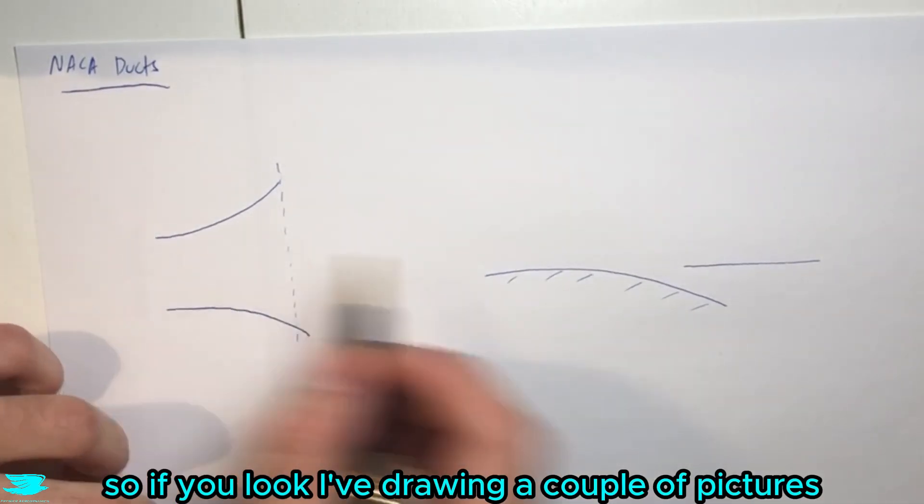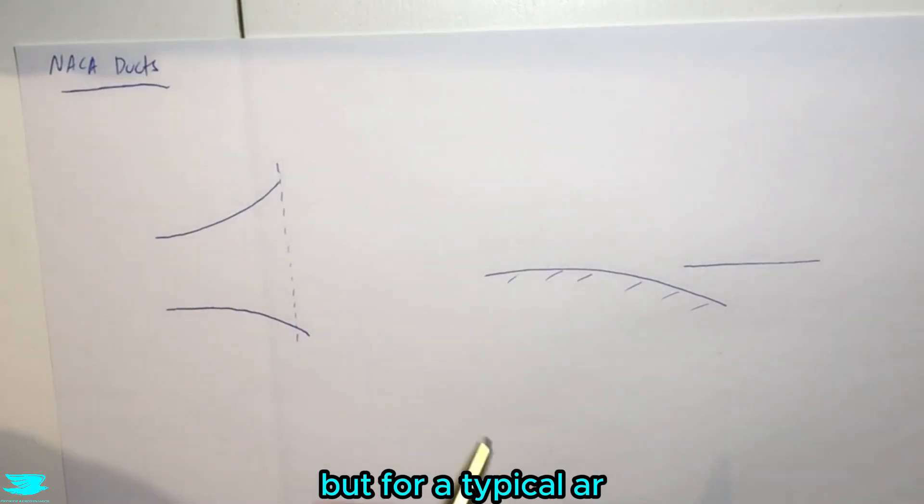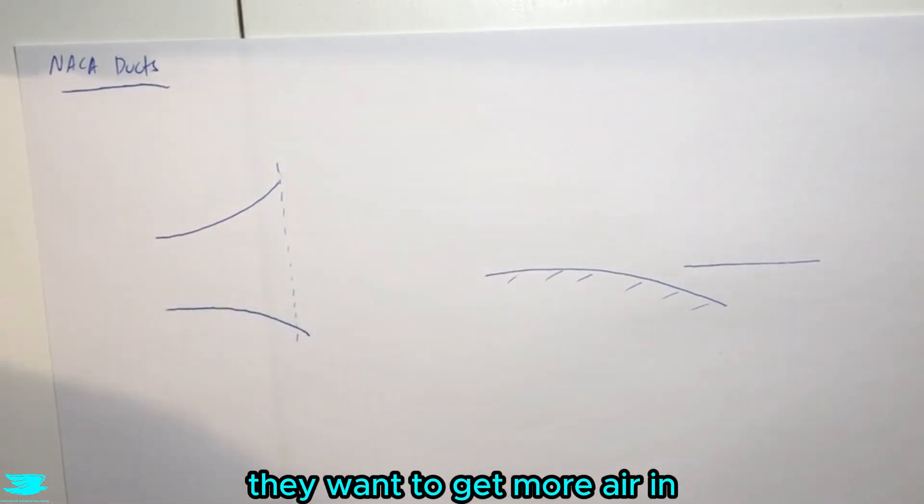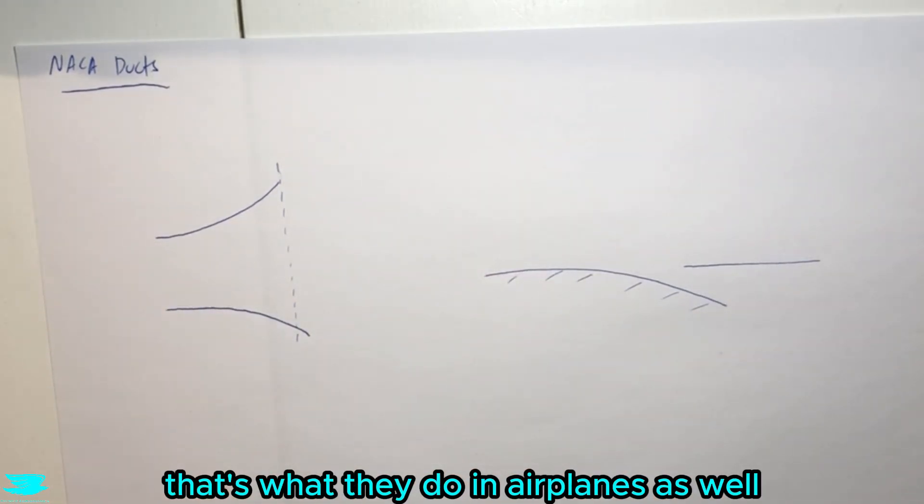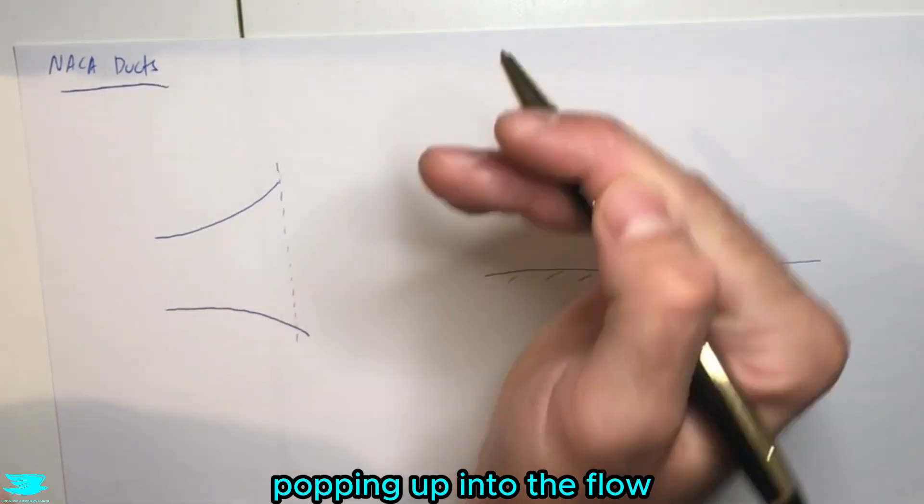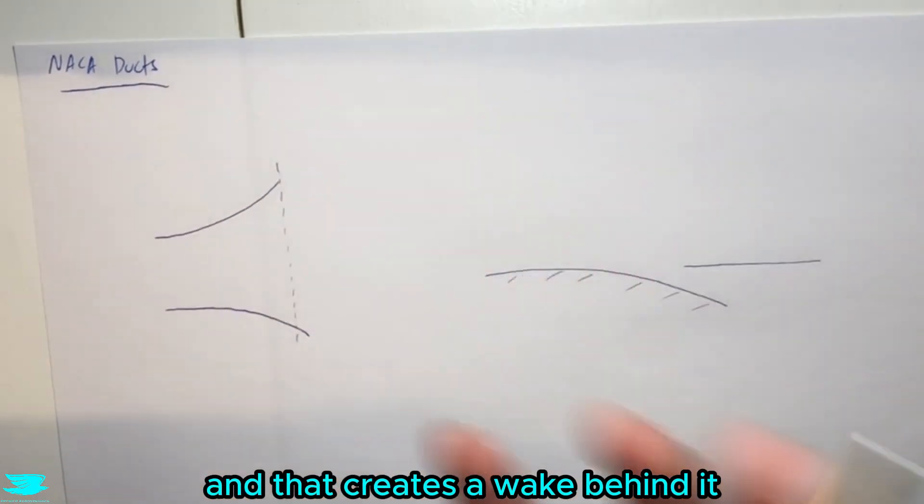So if you look at, I'm drawing a picture soon, I'll explain what they are, but for a typical car they might have a scoop coming up if they want to get more air in. That's what they do in airplanes as well. But that increases the drag greatly because you have now this geometry popping up into the floor, and that creates a wake behind it, potentially.